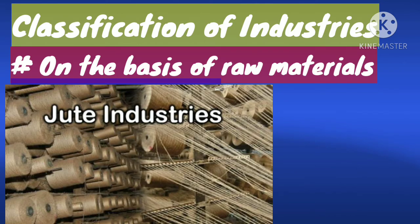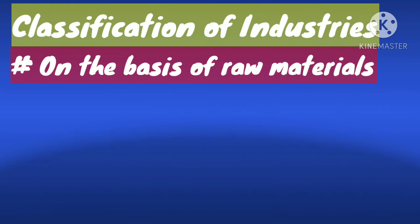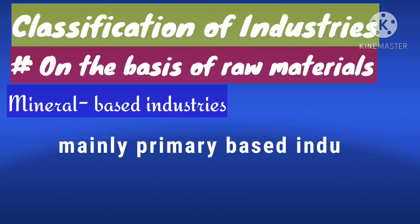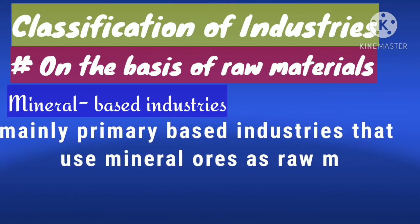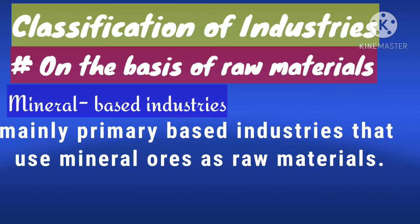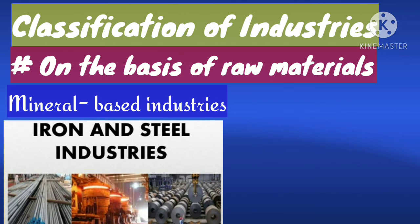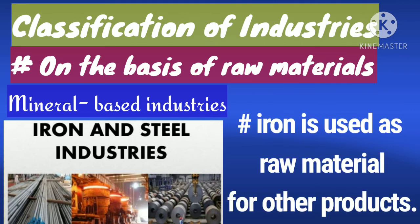The second category is mineral-based industries. These are primarily based industries that use mineral ores as their raw materials. Their products feed other industries — for example, iron made from iron ore is used as the raw material for manufacturing other products such as heavy machines, building materials, and railway coaches.